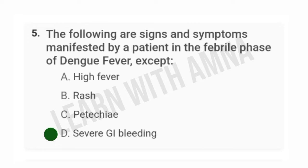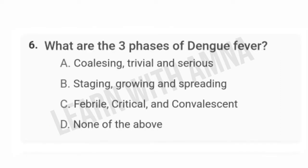What are the three phases of dengue fever? A) Coalescing, trivial, and serious. B) Staging, growing, and spreading. C) Febrile, critical, and convalescent. D) None of the above. The correct answer is C.